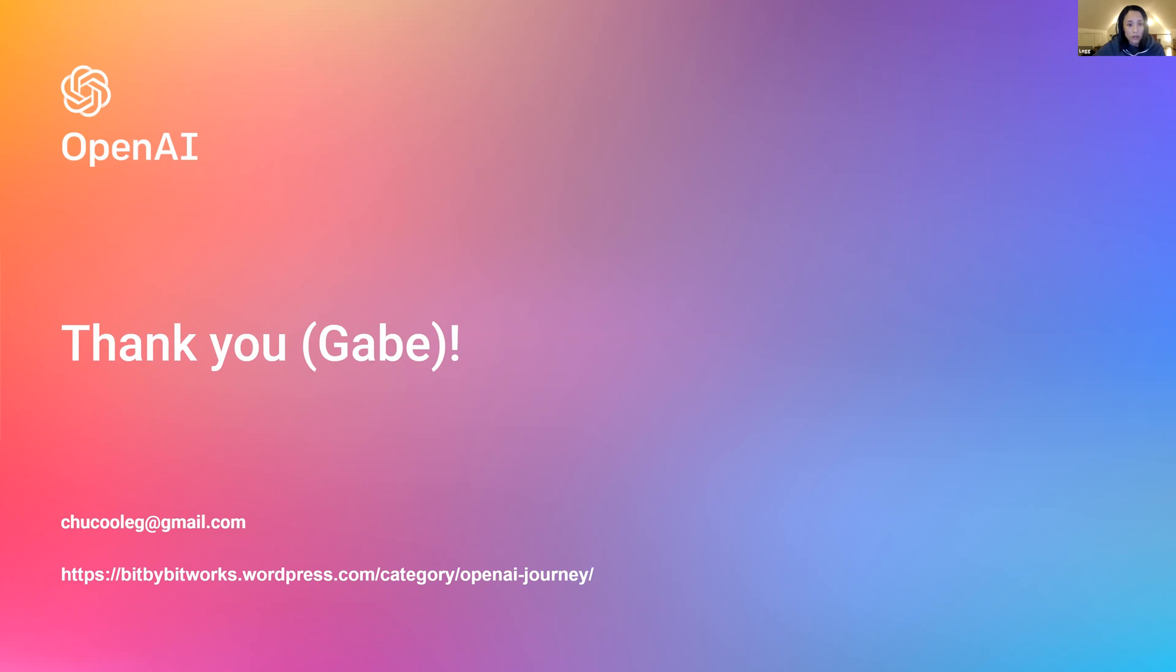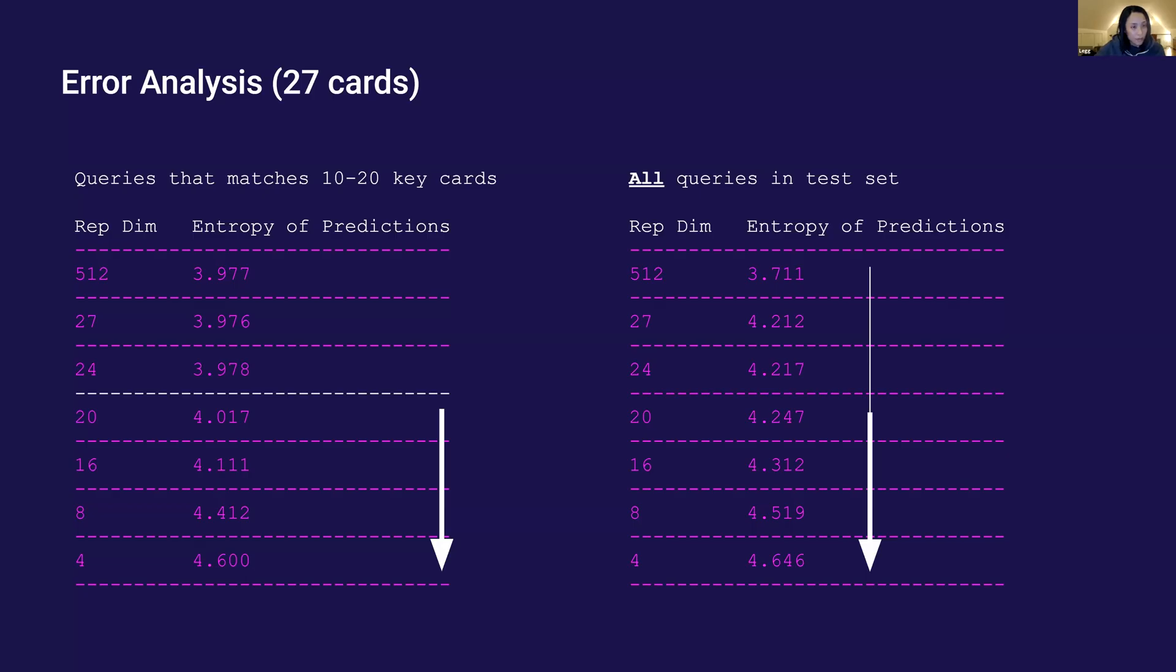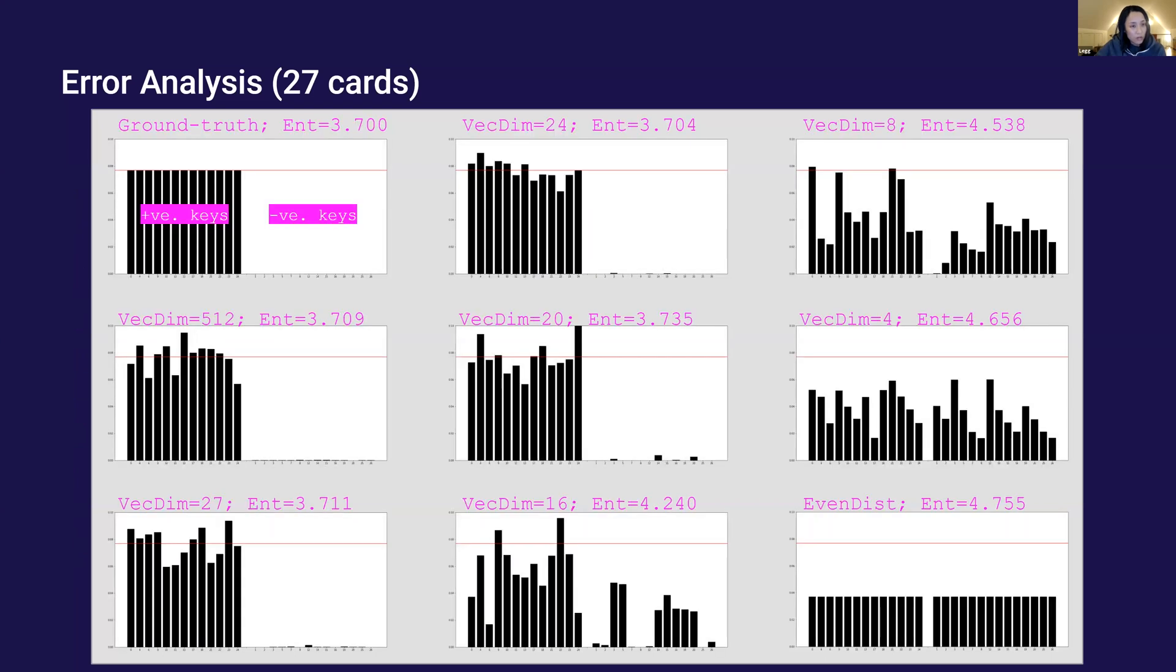So there is a question on the intuition behind entropy going up as the embedding dimension goes down. So from the error analysis that I saw, I saw that as the vector dimension goes down, the vectors themselves become less able to encode enough signals that allow them to separate the different keys.